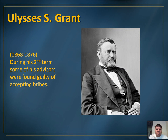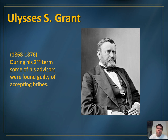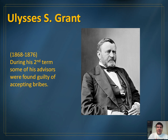Many of the presidents that came after the Civil War had presidencies marked with political corruption. Even Ulysses S. Grant — during his second term, some of his advisors, people he trusted, were found guilty of accepting bribes. There's no evidence that Grant knew they were accepting bribes, but once it came out, he was responsible because he hired them, and it became a mark on his presidency.